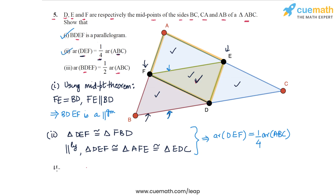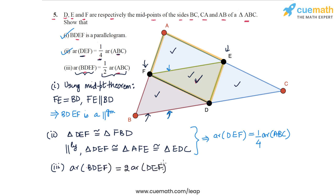Now finally, in part three, we have to prove that the area of parallelogram BDEF is half the area of ABC. But this is actually straightforward. The area of BDEF will be twice the area of triangle DEF — the small green triangle in the middle — because the diagonal of a parallelogram divides it into two congruent triangles. And we know that the area of DEF is one-fourth the area of ABC, so instead of area of DEF, let's write one-fourth the area of ABC.